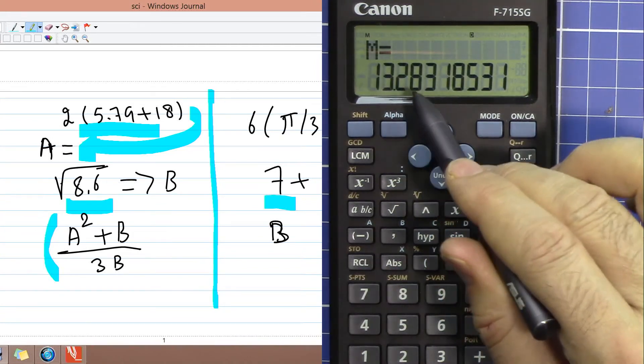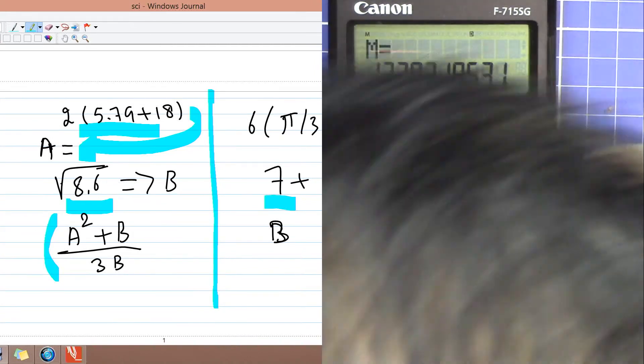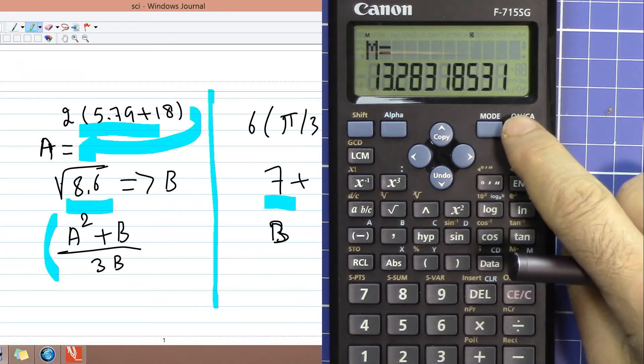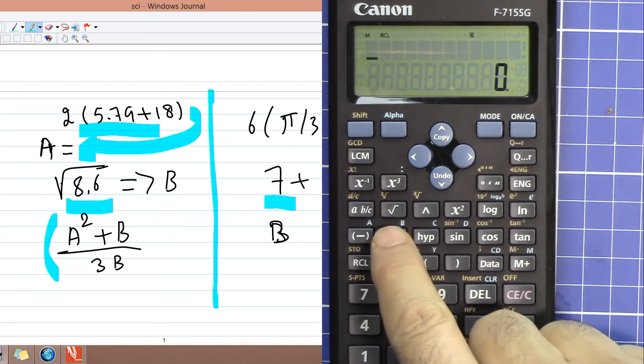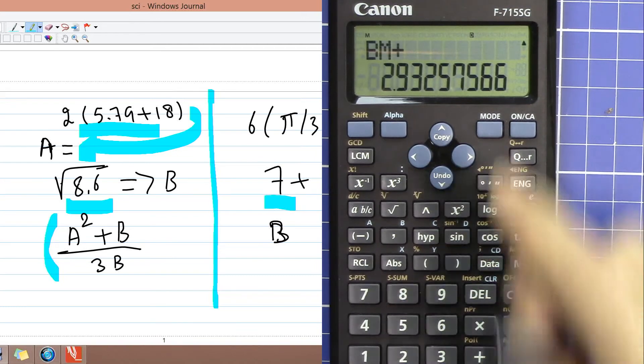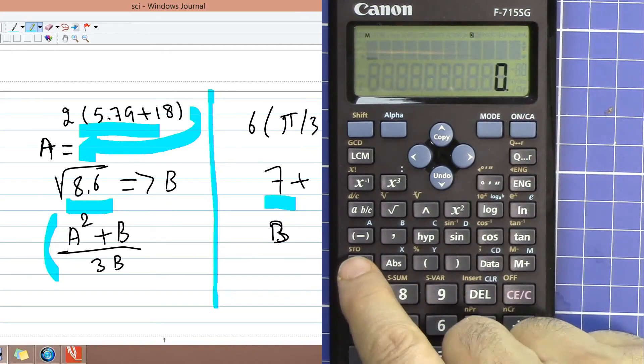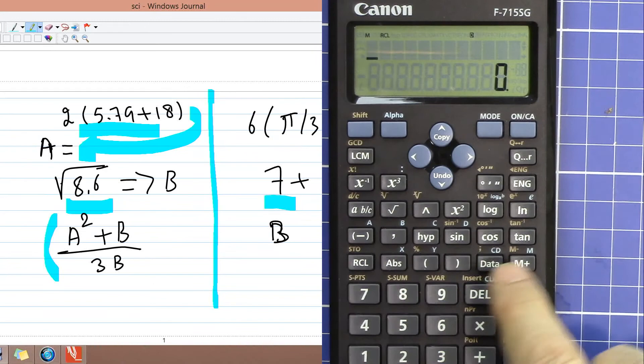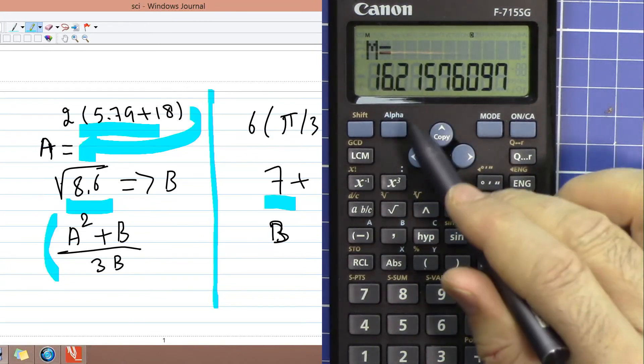Now let's add B to that. So recall B and add M. So now B is also added to the memory. Recall M, you see now the value is reflecting all those calculations.